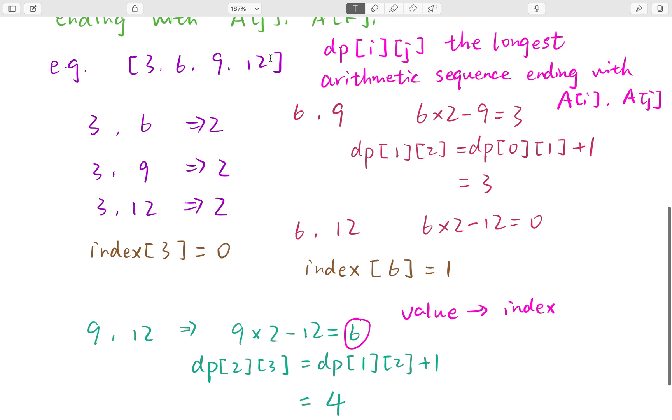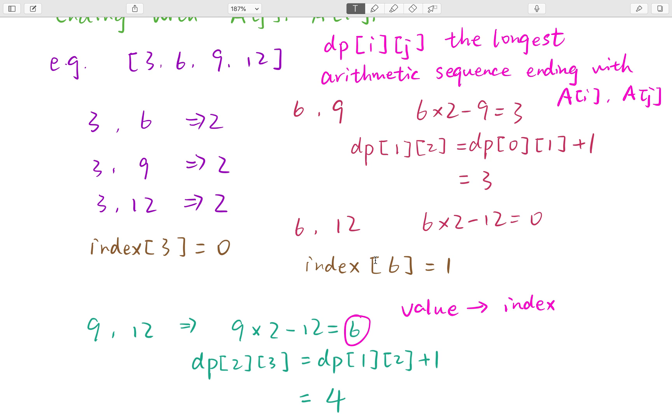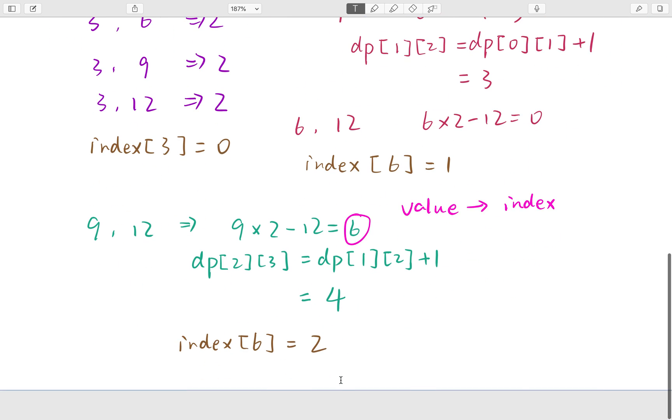Okay. So then we go to 9, 12. The first element we need to get is 9 times 2 minus 12, which is 6. Yes, the index already exists. And we just get its index, which is 1. So dp[2,3] equal to dp[1,2] plus 1, which is 4. Okay.